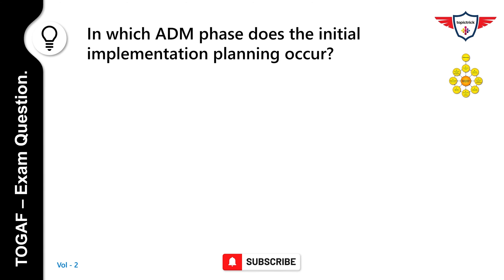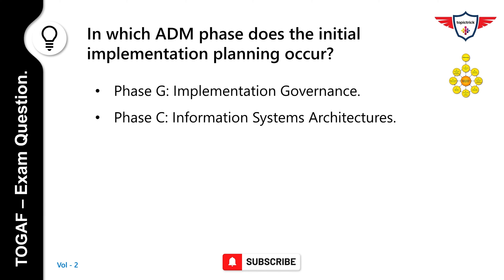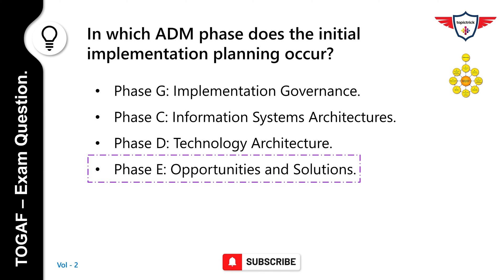In which ADM phase does the initial implementation planning take place? Options: Phase G Implementation Governance; Phase C Information Systems Architectures; Phase D Technology Architecture; Phase E Opportunities and Solutions. The correct answer is Phase E, Opportunities and Solutions. In this phase, initial implementation planning is done and major implementation projects are identified. If needed, Transition Architectures are also developed in this phase.